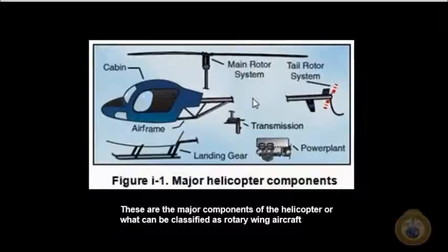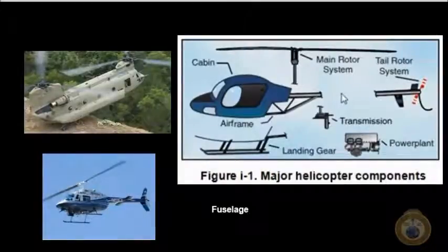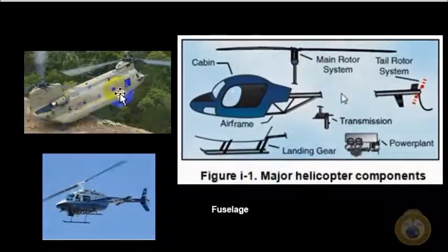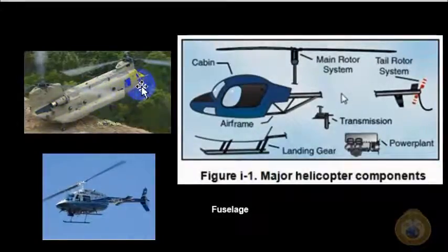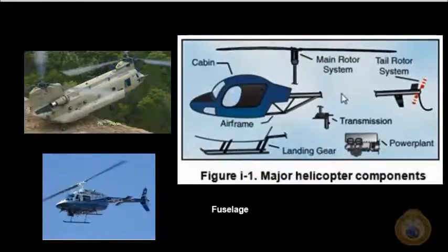This would be a helicopter, or what we would classify as a rotary wing aircraft. Let's jump in and talk about the fuselage. The fuselage basically houses the cockpit and cargo. The cockpit holds the aircrew that are actually manipulating the controls to operate the helicopter.